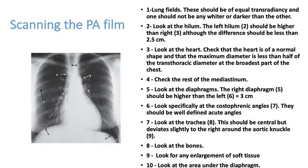When we get an x-ray, try to read the patient name, medical record number, date, and right and left orientation. Then look at the lung fields. Both sides of the lungs should be equal in color. Since a lung contains air, it will be black in color. Since the heart contains fluid, it will be white in color. Soft tissues, fluid, and bones also look white in color. Air-containing structures will look dark in color.